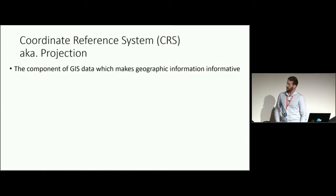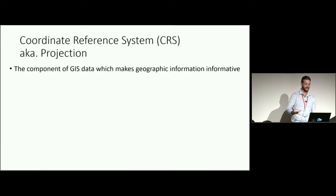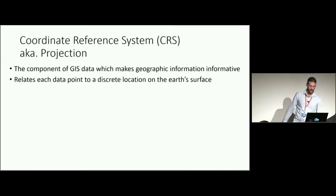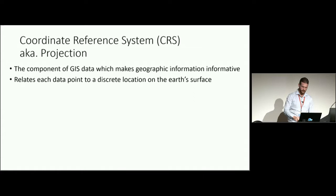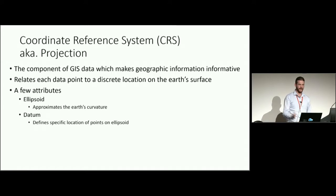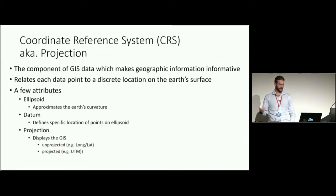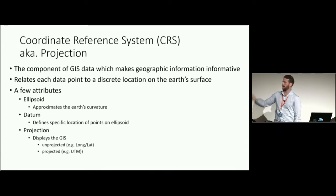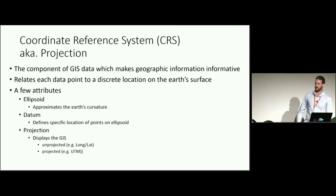What makes geographic data different from other forms of data is a thing called the coordinate reference system, commonly called the projection. It relates every single point in the data to a discrete point on the Earth's surface. It has three main attributes: the ellipsoid, which approximates Earth's curvature; the datum, which specifies the location of points on the ellipsoid; and the projection itself. You can have unprojected and projected ones — unprojected means that moving 0.5 degrees changes actual distance depending on latitude, whereas a projected one like UTM is in metres.